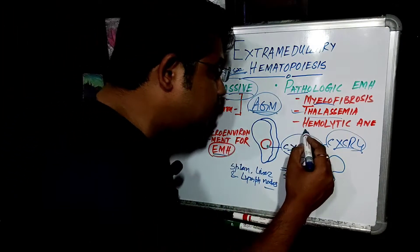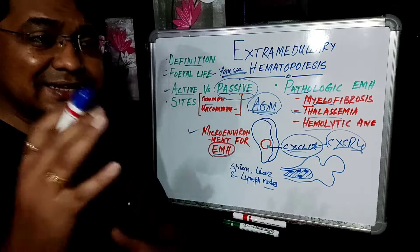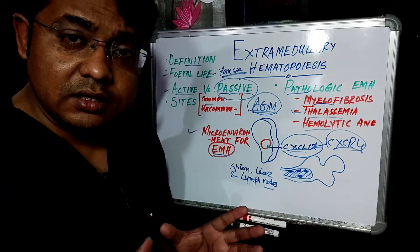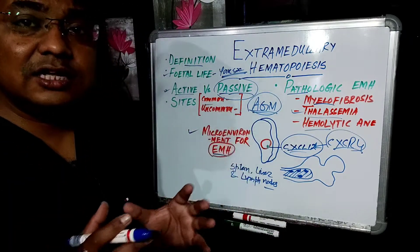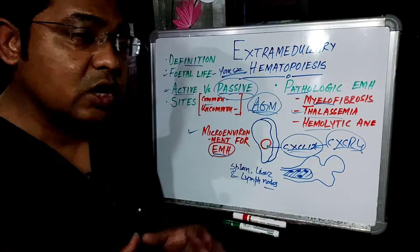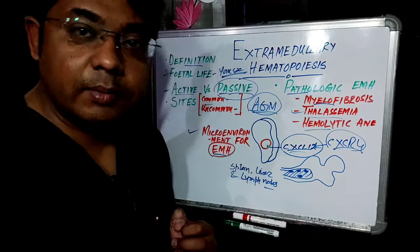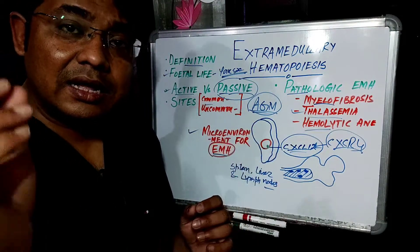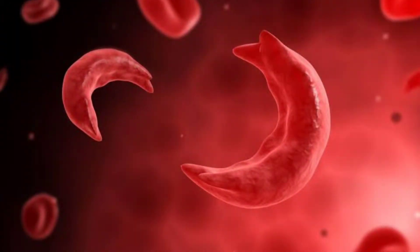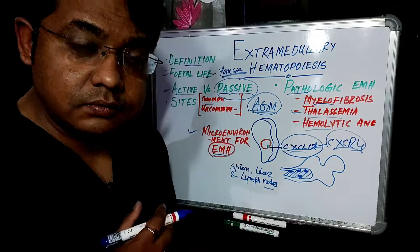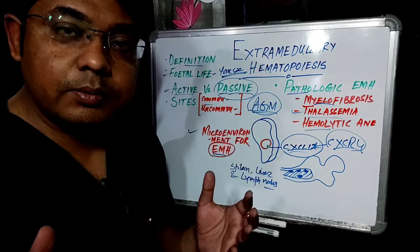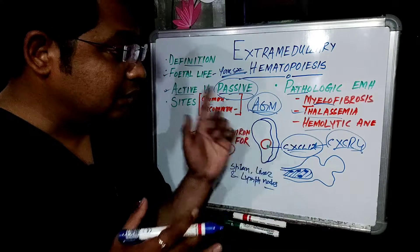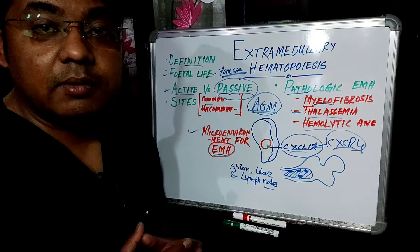Hemolytic anemia means there is destruction of RBCs within the body. The most common causes leading to extramedullary hematopoiesis are sickle cell anemia and hereditary spherocytosis. In sickle cell anemia, there is one amino acid substitution in the globin chain, leading to hemoglobin polymer formation. These polymers distort the RBCs, which are then lysed within the spleen. There is increased need for RBC production, so the liver and spleen help produce more RBCs, resulting in hepatomegaly, splenomegaly, and extramedullary hematopoiesis within both organs.